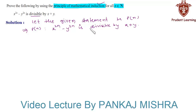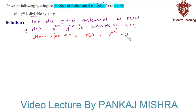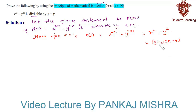We will check that this statement is true or not for n equal to 1. For n equal to 1, we have P(1) equal to x raised to 2 minus y raised to 2. We know that x squared minus y squared can be written as (x plus y)(x minus y), and since this is divisible by x plus y, therefore P(1) is true.